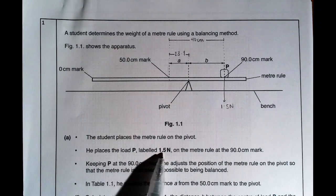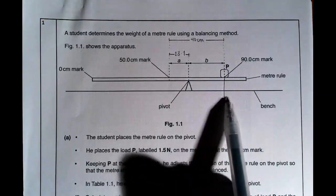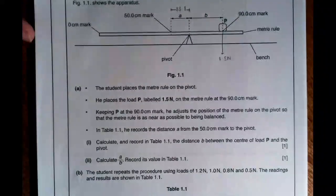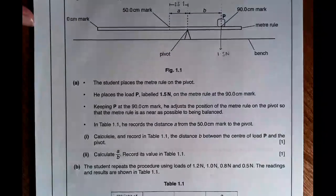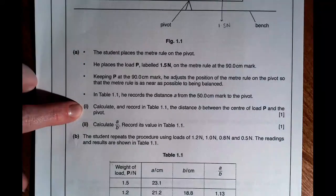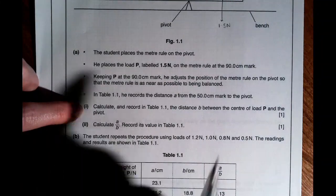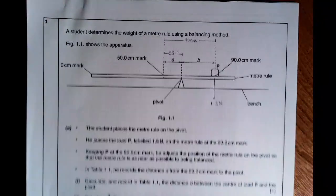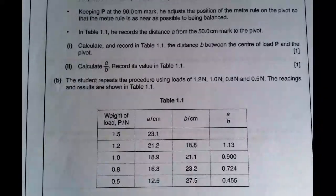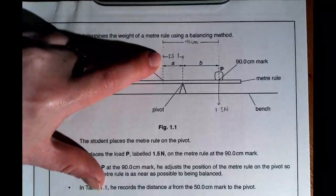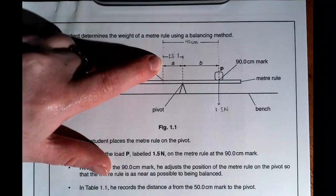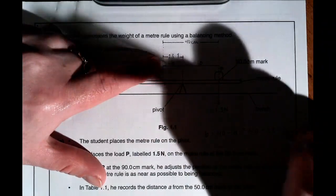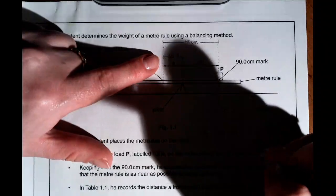He places the load p, labelled 1.5 newtons, on the metre ruler at the 90 centimetre mark. So I now add a force arrow of 1.5 newtons at that point. Keeping p at that mark, he adjusts the position of the metre ruler until it is as near as possible to being balanced. The first thing it asks you to do is calculate and record in table 1.1 the distance b. You can see that a's already been given in the table, so that's 23.1, and we're trying to work out what b is. If I know that a to b is 40 centimetres, then b is going to be 40 minus a, which is going to be 40 minus 23.1, and that is equal to 16.9.